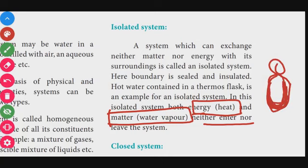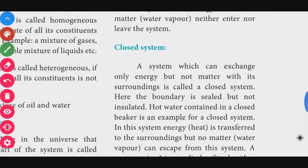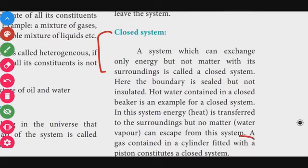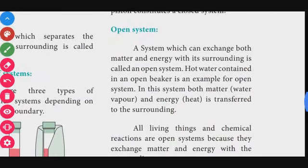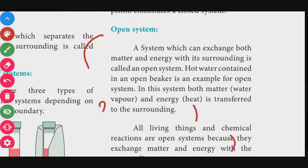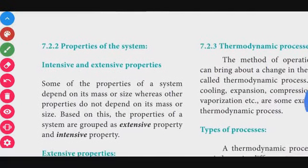These three systems are important. Isolated system can be a two or three-mark question. Closed system with two examples is a two-mark question. Open system is also a separate question. If asked about all three types of systems together, it becomes a five-mark question.